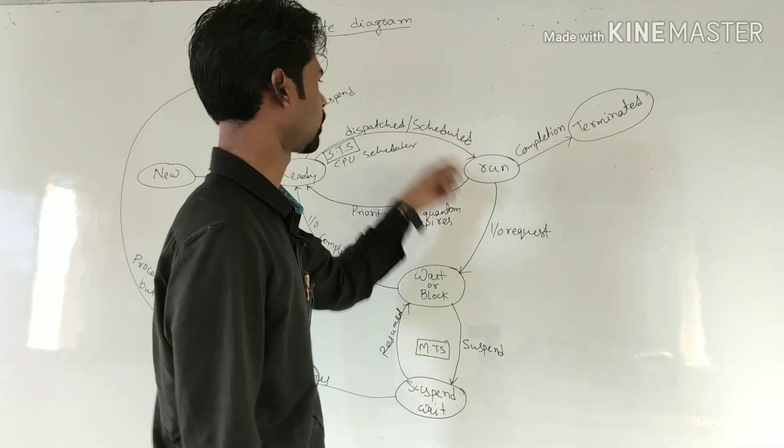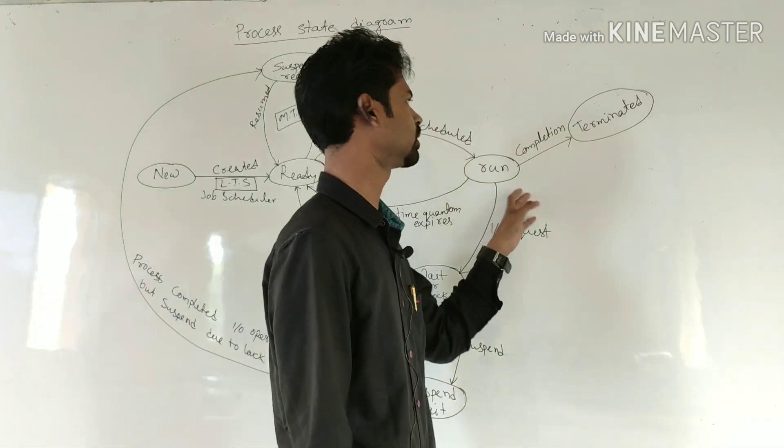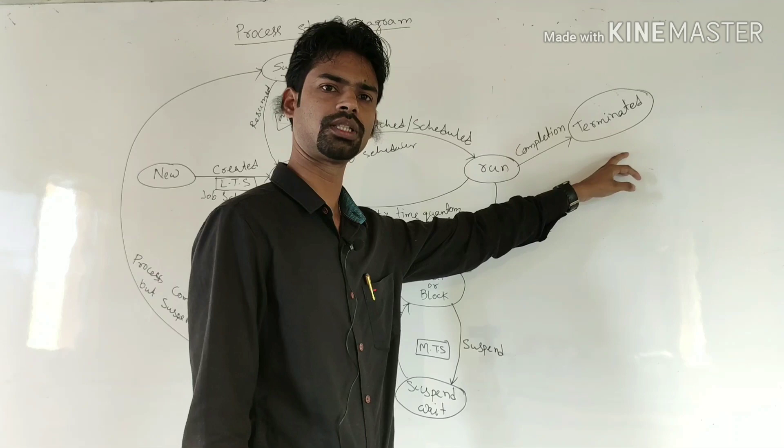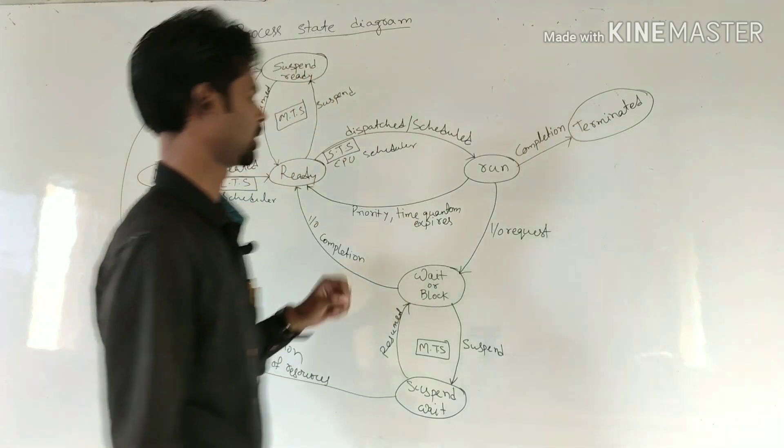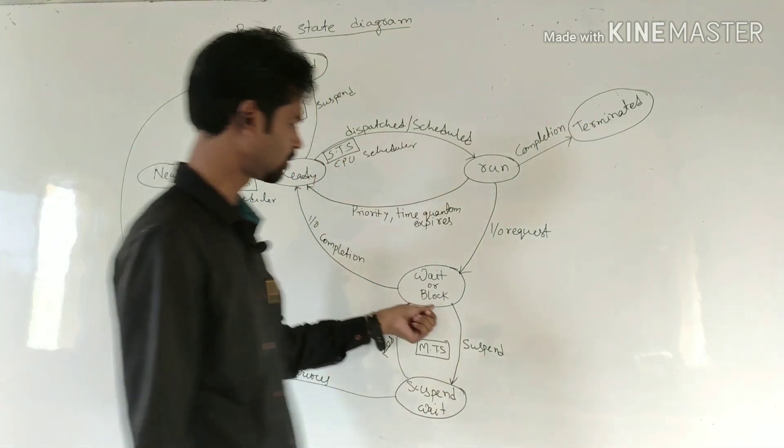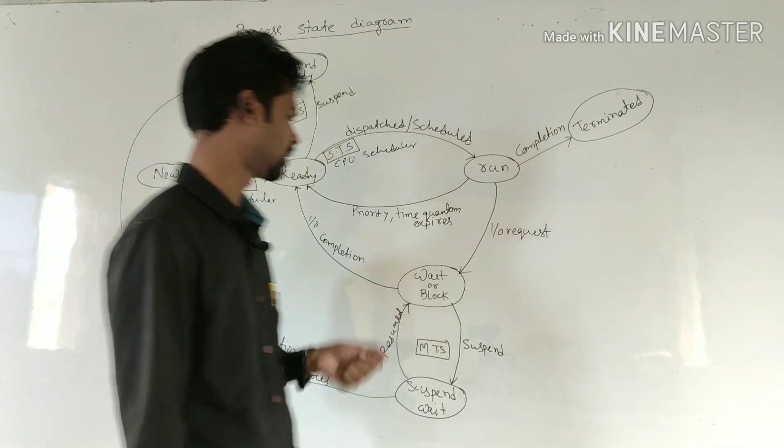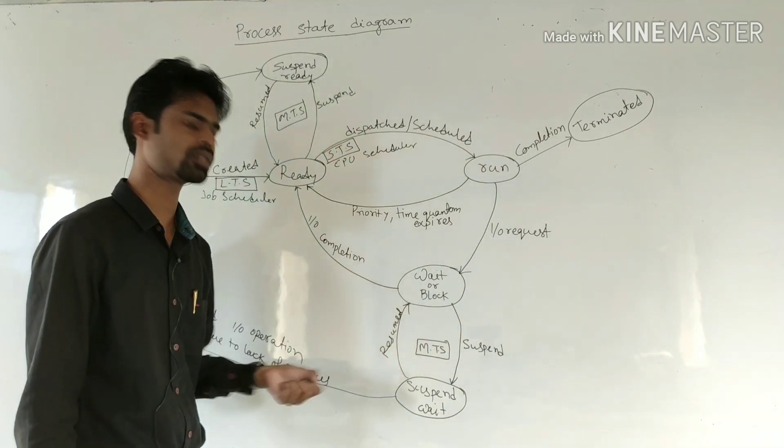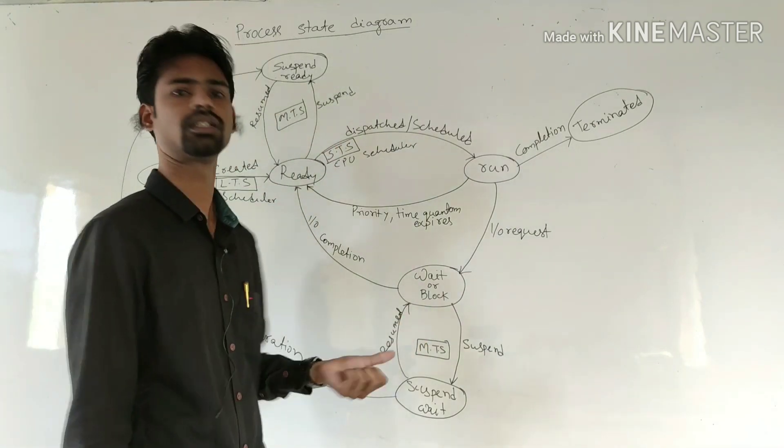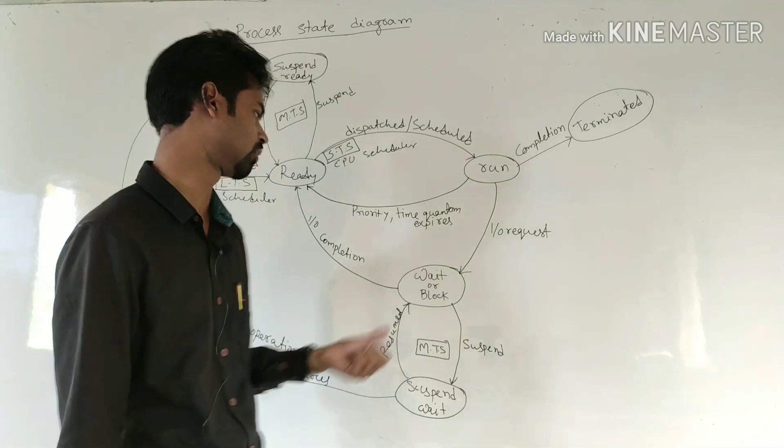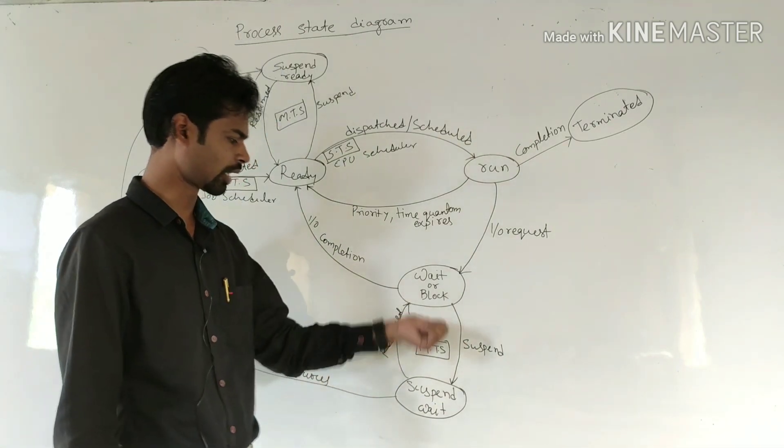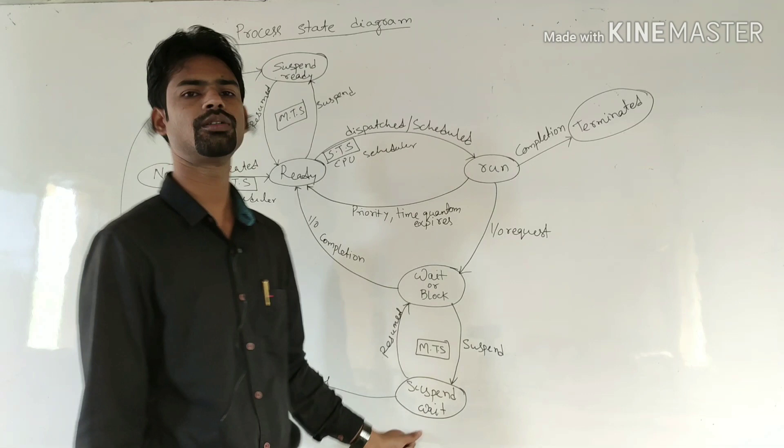If a process completes its execution, it will move to terminated state. At the time of waiting or block state, if further any resource is required but resource is not available, then it will transfer to suspend wait state.